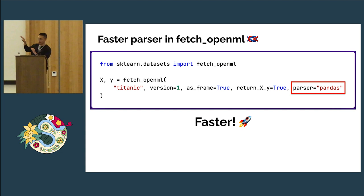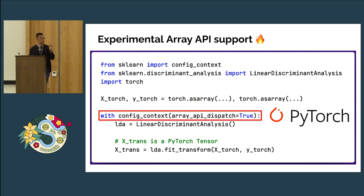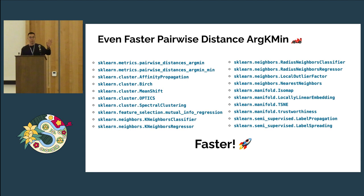For those familiar with Fetch OpenML, using a Pandas parser is now faster. We take advantage of the Array API, and in Scikit-learn 1.2 we introduced it, and in 1.3 we added PyTorch to the board. So you can run certain models in Scikit-learn with a GPU on PyTorch — really cool. With a context manager, it just works. Things are faster all around — these estimators and functions are faster, so upgrading gives you wins.